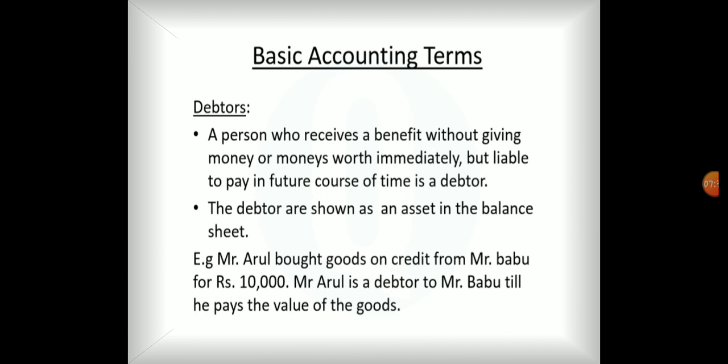The debtor is shown on the asset side of the balance sheet. In short, if you had given money or goods to someone else, until that person pays back the money, they are considered a debtor. The person who receives the benefit you are giving is considered a debtor.